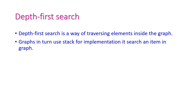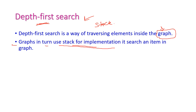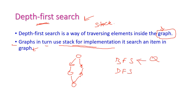The next application is depth first search. If you want to find a particular element in a graph, one method is depth first search, which implements a stack to find the particular element. For searching a particular item in a graph, we can use two different searching methods: breadth first search and depth first search. Breadth first search is used to implement a queue structure, while depth first search is used to implement a stack structure. So, DFS uses stack structure.